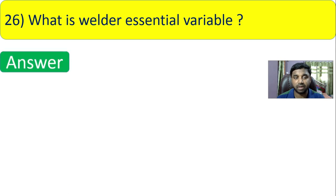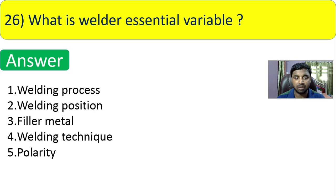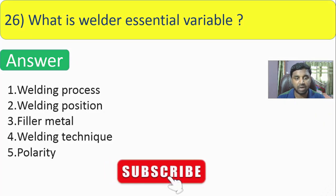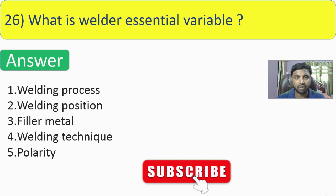Question 26: what are the welder essential variables? Welding process, welding position, filler metal, welding technique, and polarity. These are taken from the procedure qualification essential variables and applied as welder essential variables.